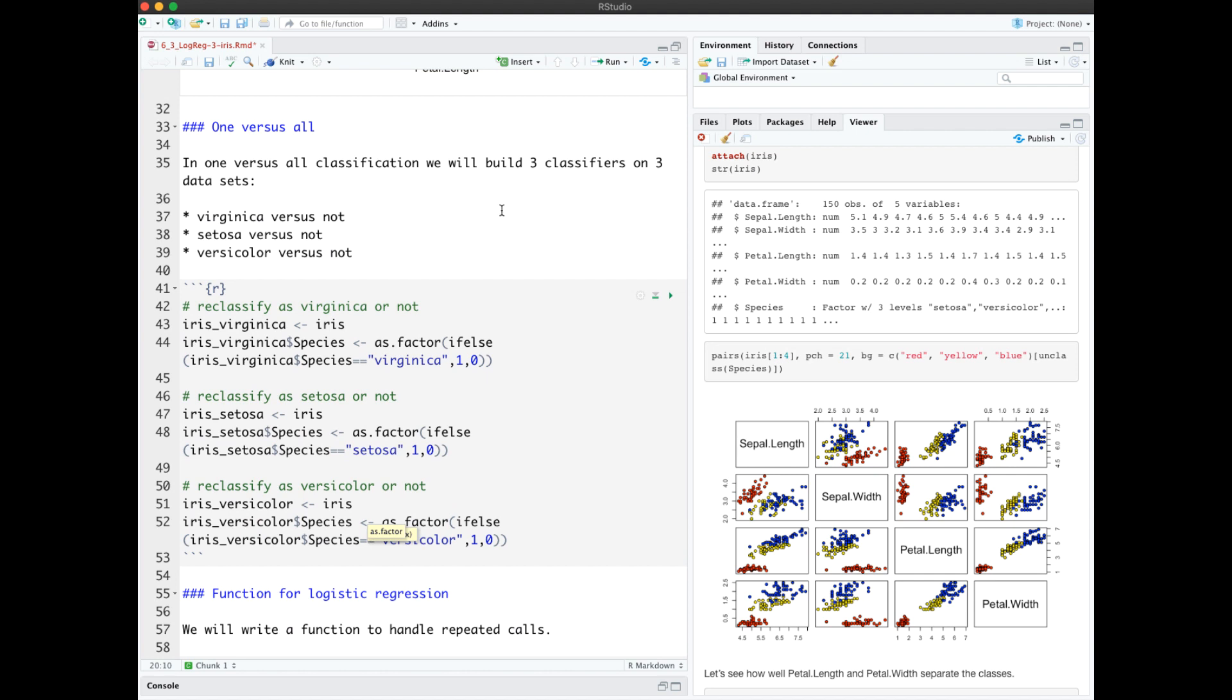The idea of one versus all is to build three different classifiers because we have three classes. So each of the three datasets that we'll use will be Virginica or not, Setosa or not, and Versicolor or not. So this code here does that. It builds three different data frames: iris Virginica, iris Setosa, and iris Versicolor.